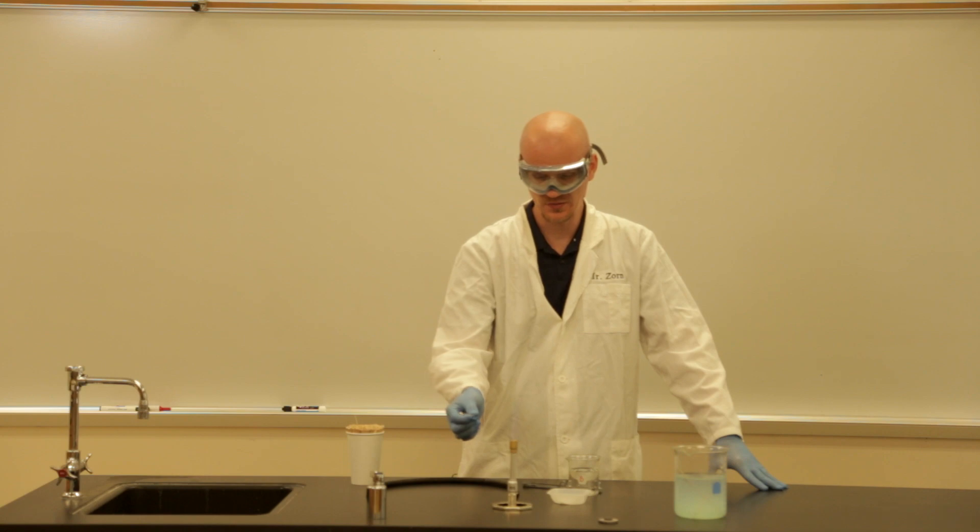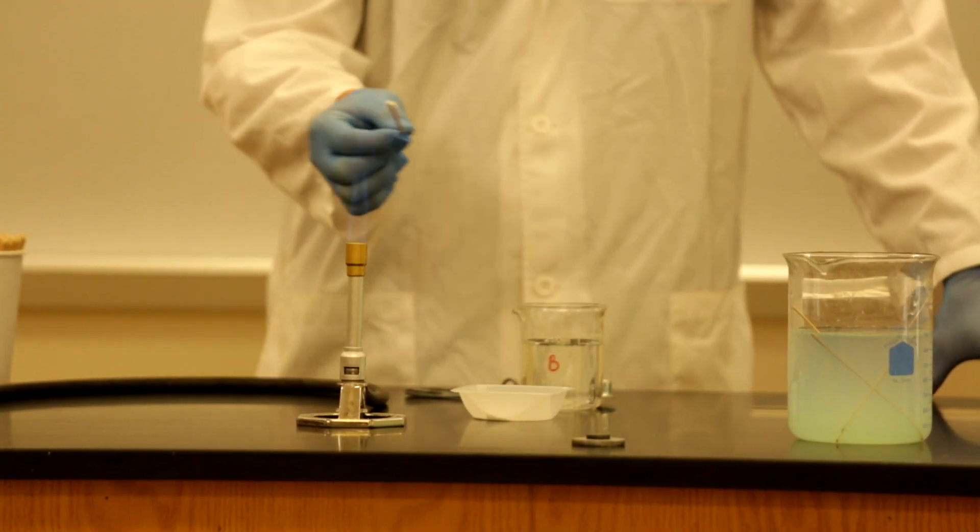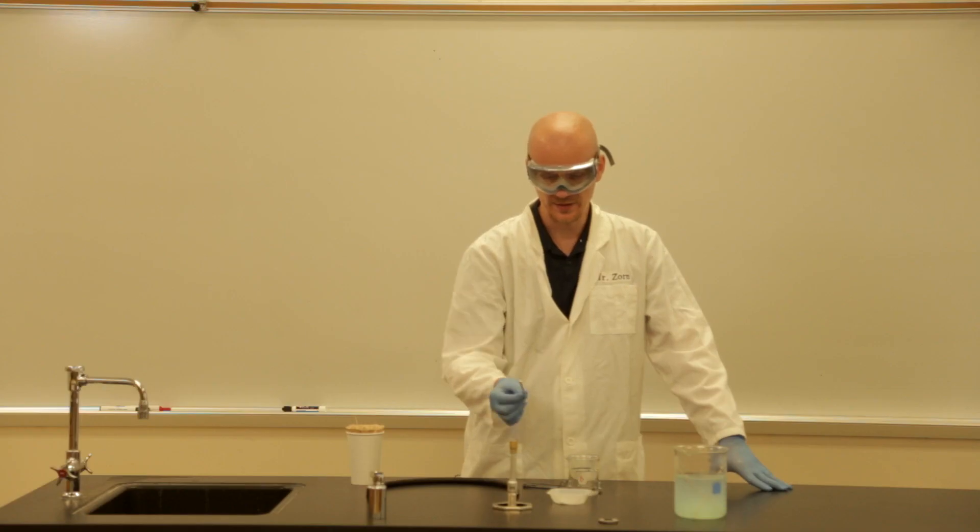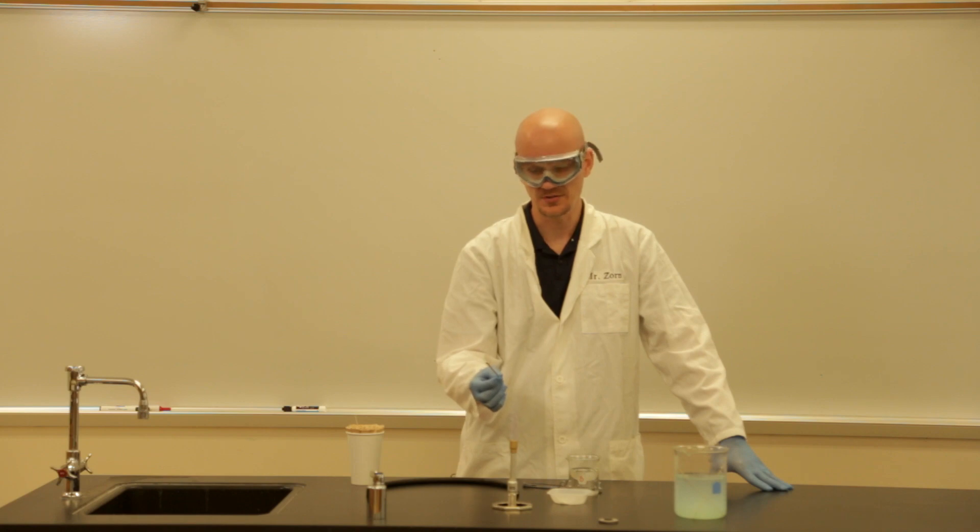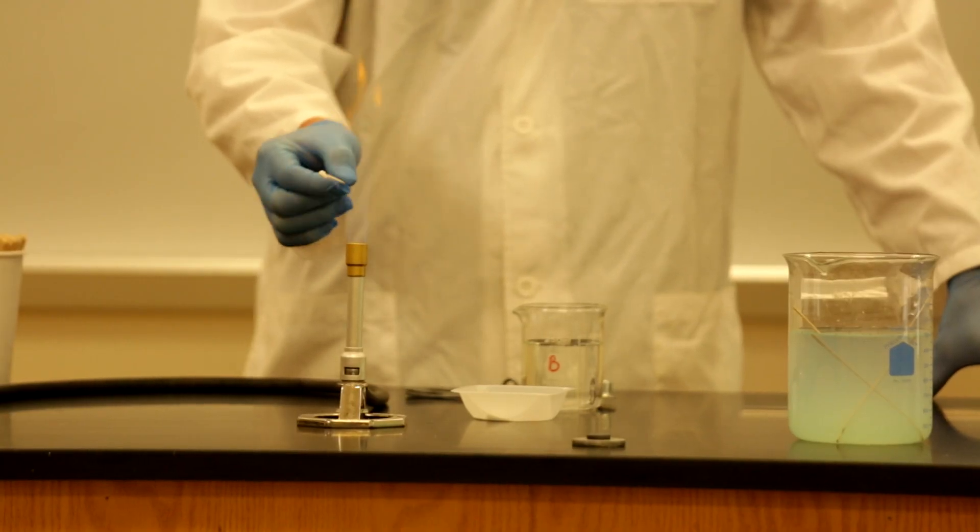And then I'm just going to pass it through the burner. You notice I get a little bit of orange there. Don't want to leave it in the flame too long because it may light your coffee stirrer on fire. Then you're going to get false colors. So just pass it through until you see the color and then make a note of the color.